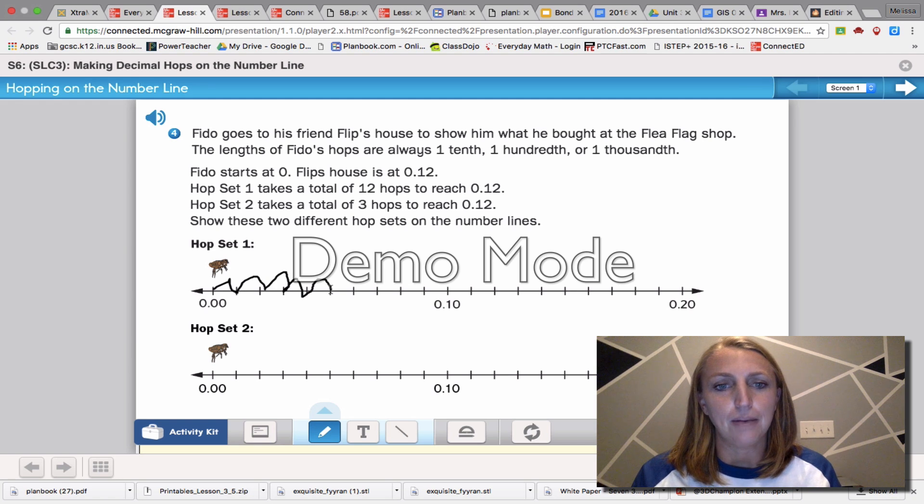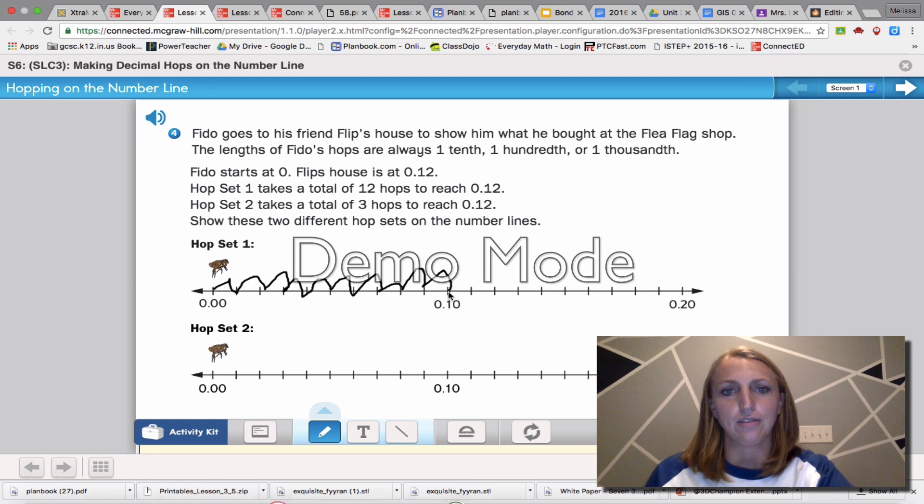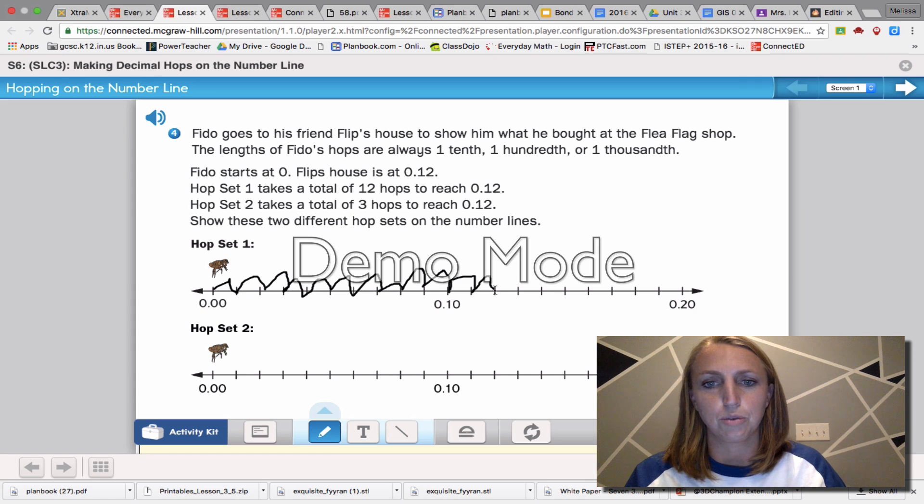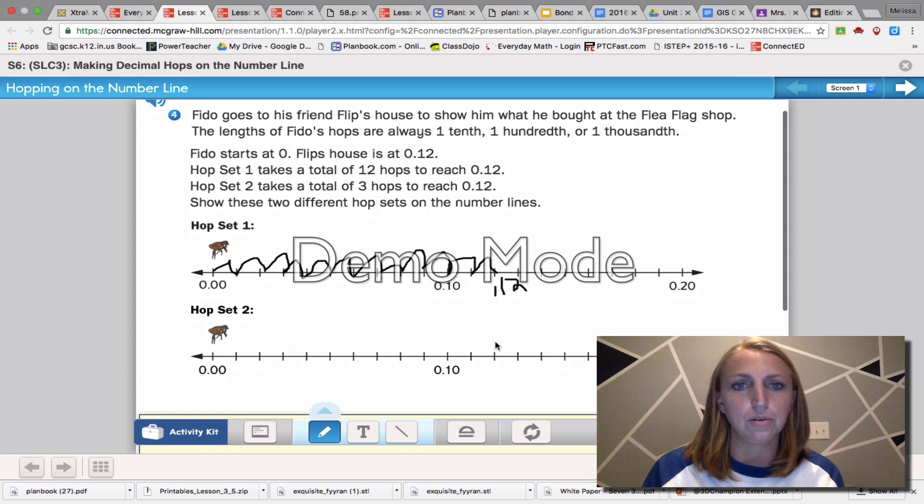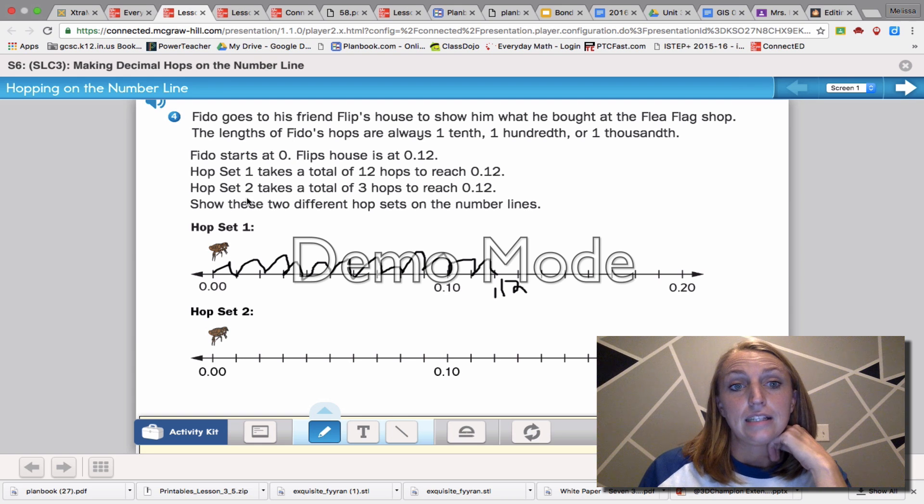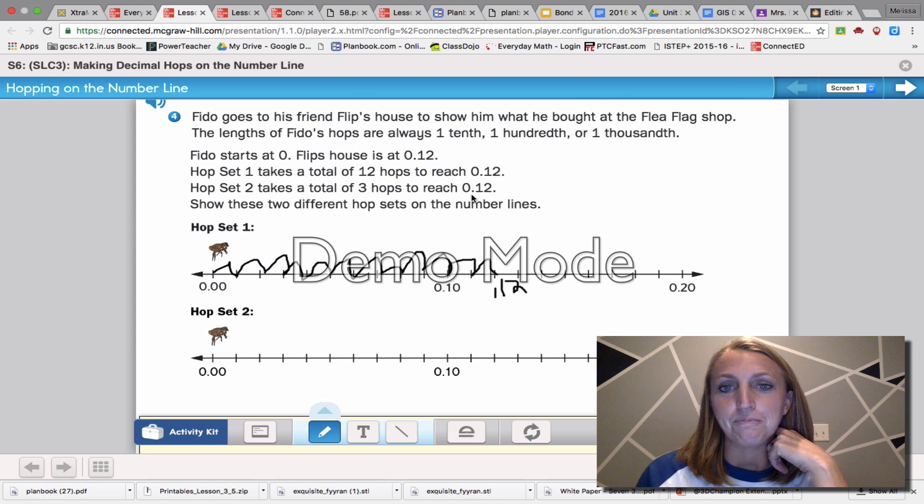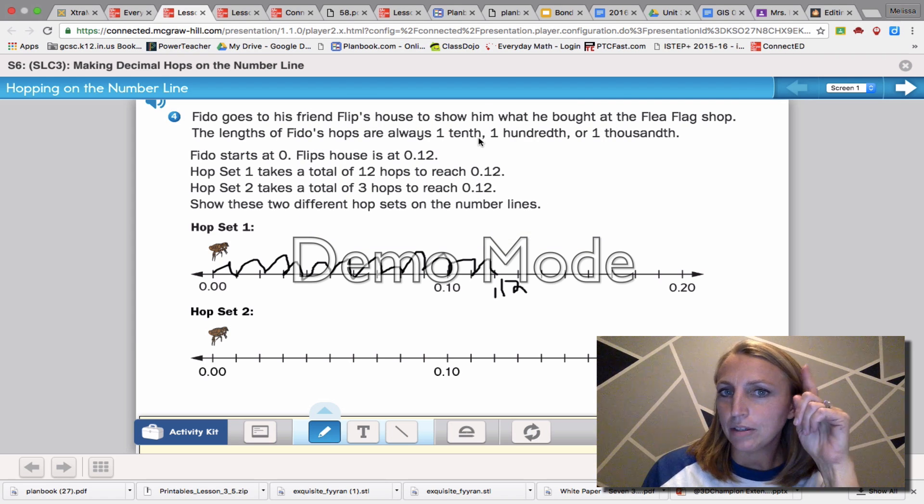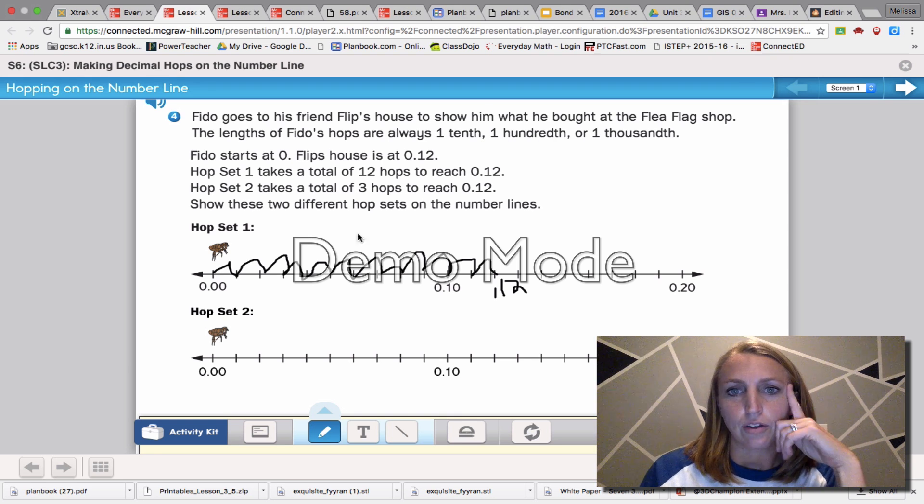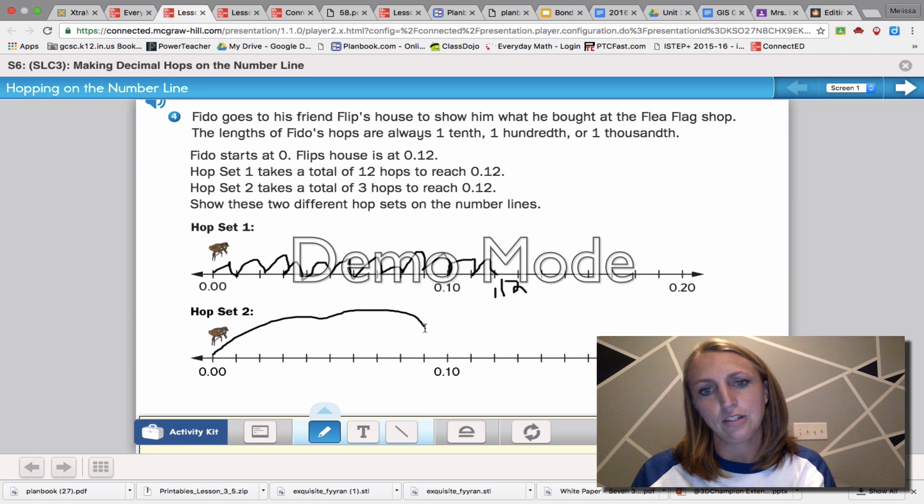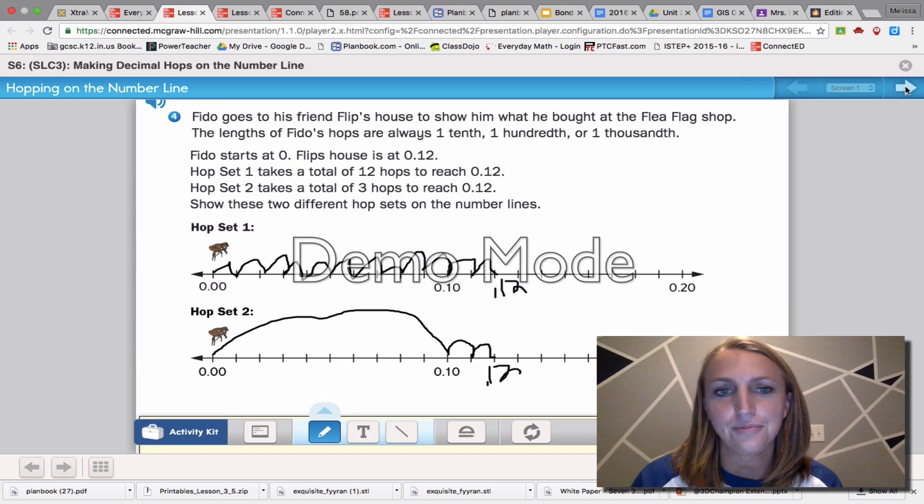Twelve hops of one one-hundredth. You know what, though? We probably wouldn't have had to. We could have gone to thousandths. Wait, that'll work, though. Twelve hops will get us to twelve-hundredths. Hop set two shows these two hop steps. The Netherlands takes a total of three hops to get to twelve-hundredths. But his hops are always one-tenth, one-hundredth, or one-thousandth. So if he takes three, he should probably take one giant and then one, two. So a total of three still gets us to twelve-hundredths. Perfect. You guys are so awesome.